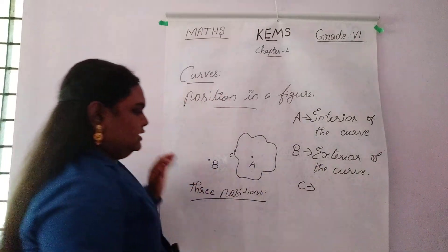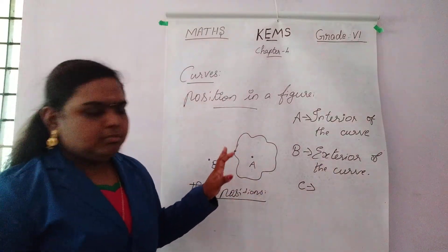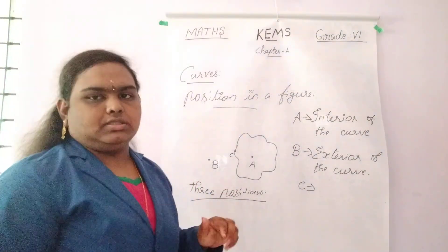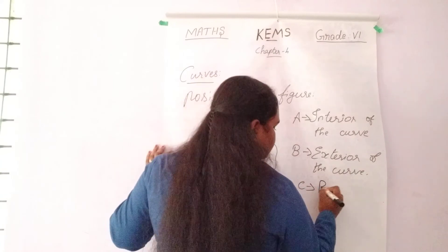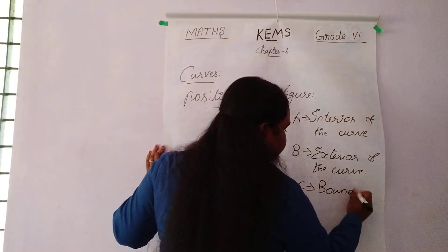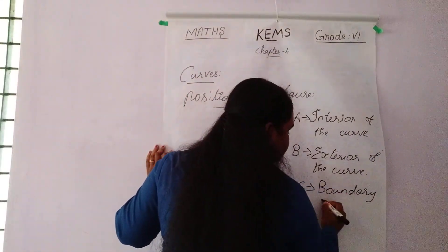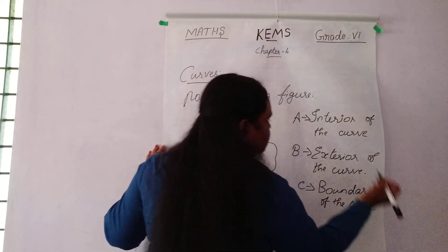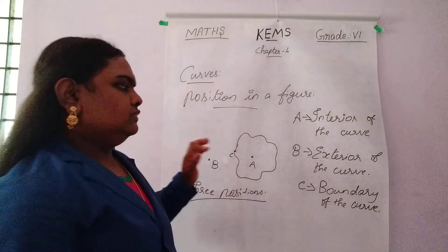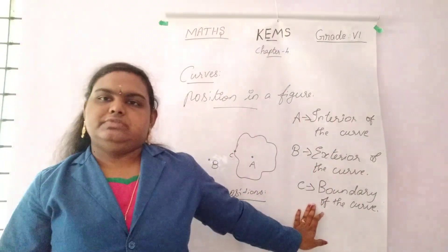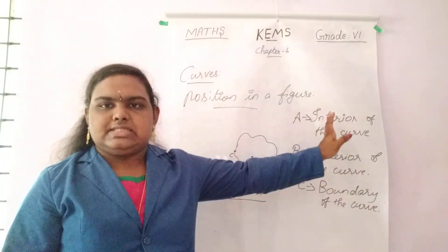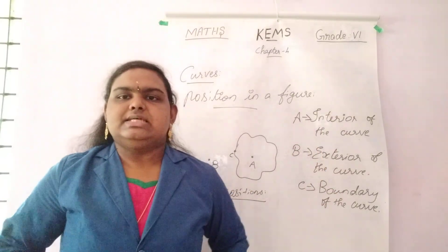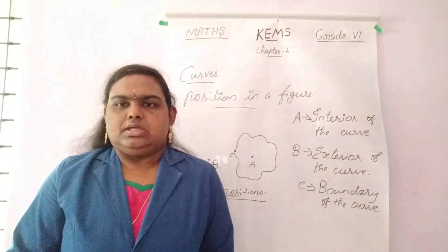Then C is the boundary of the curve, or otherwise on the curve. So the three positions are: interior of the curve, exterior of the curve, and boundary of the curve — that is inside, outside, and on the curve.